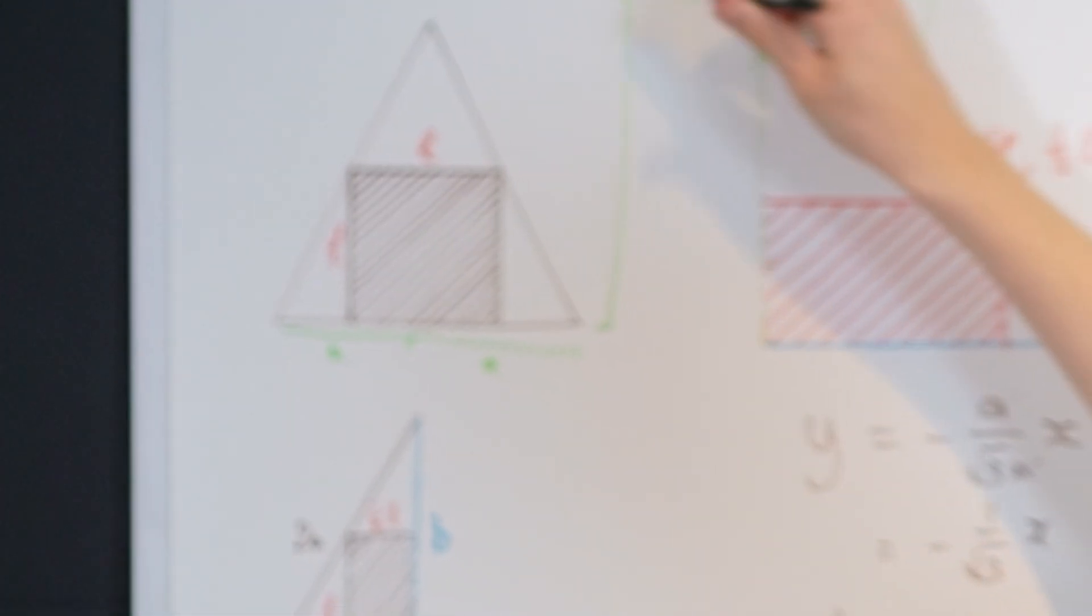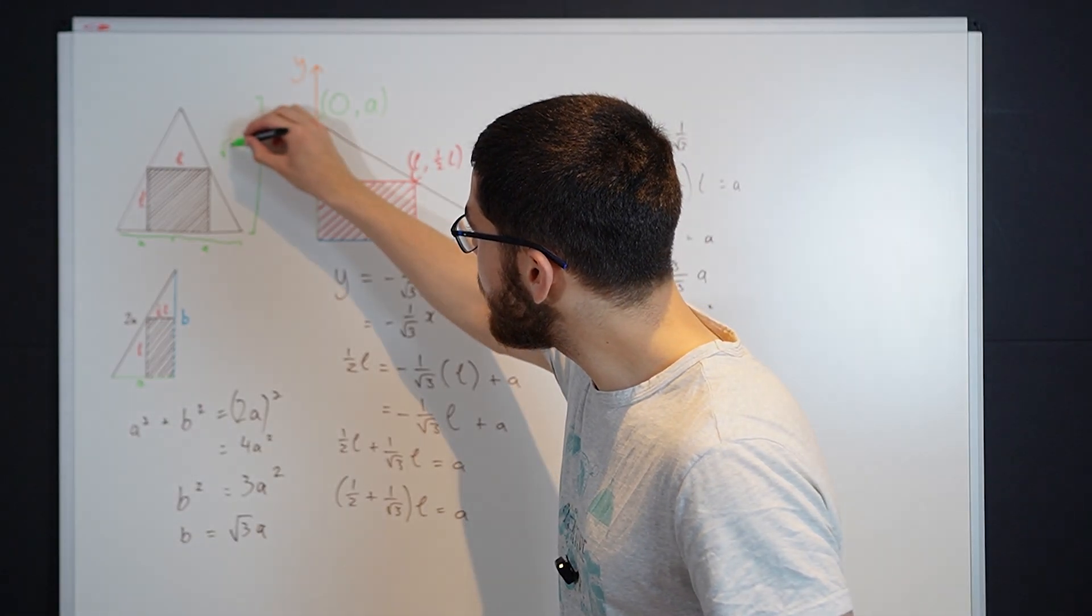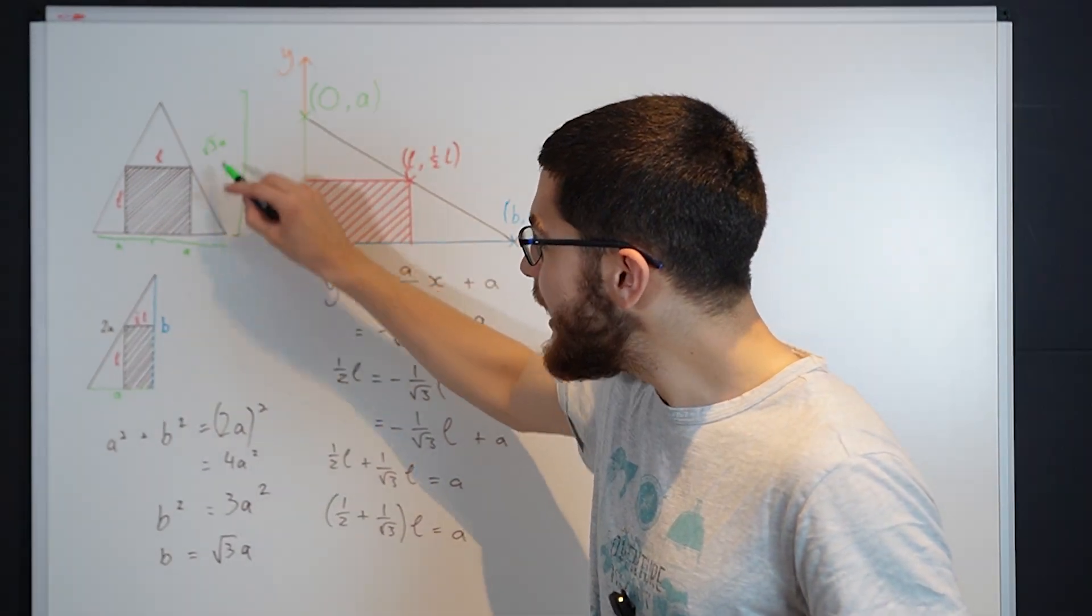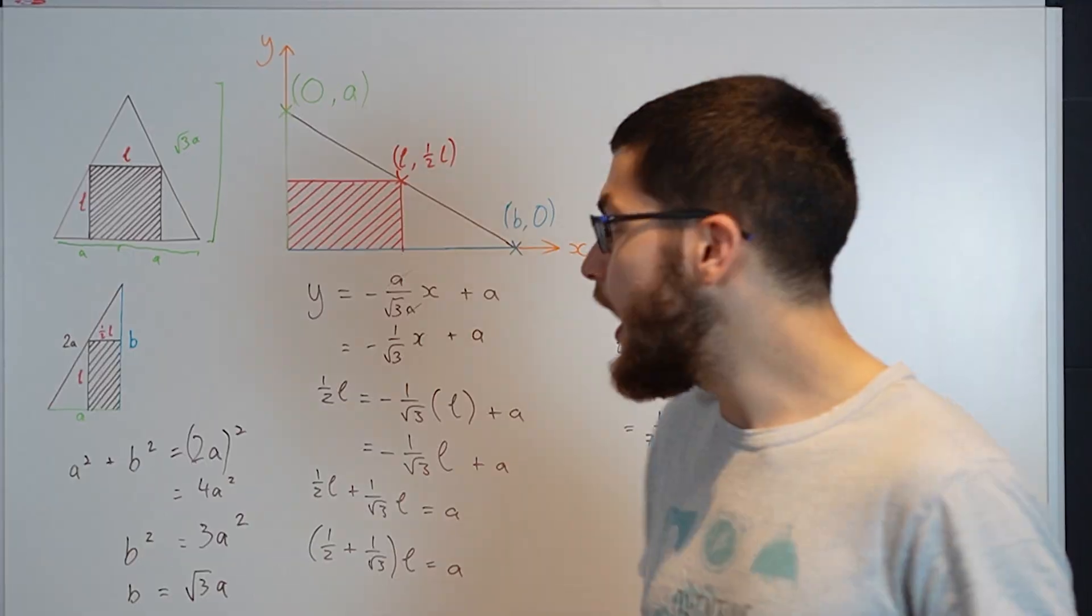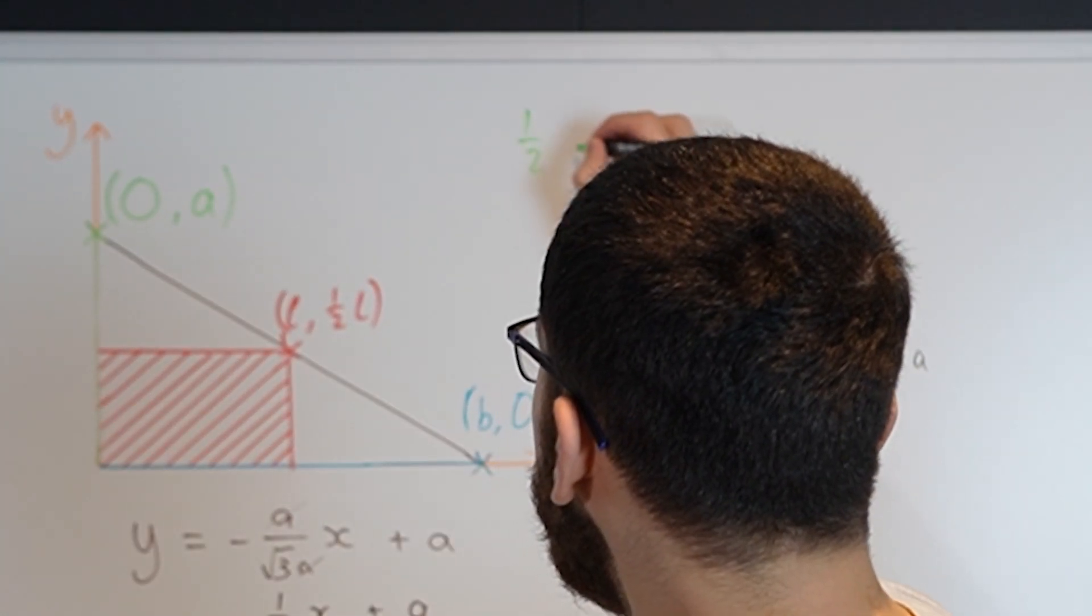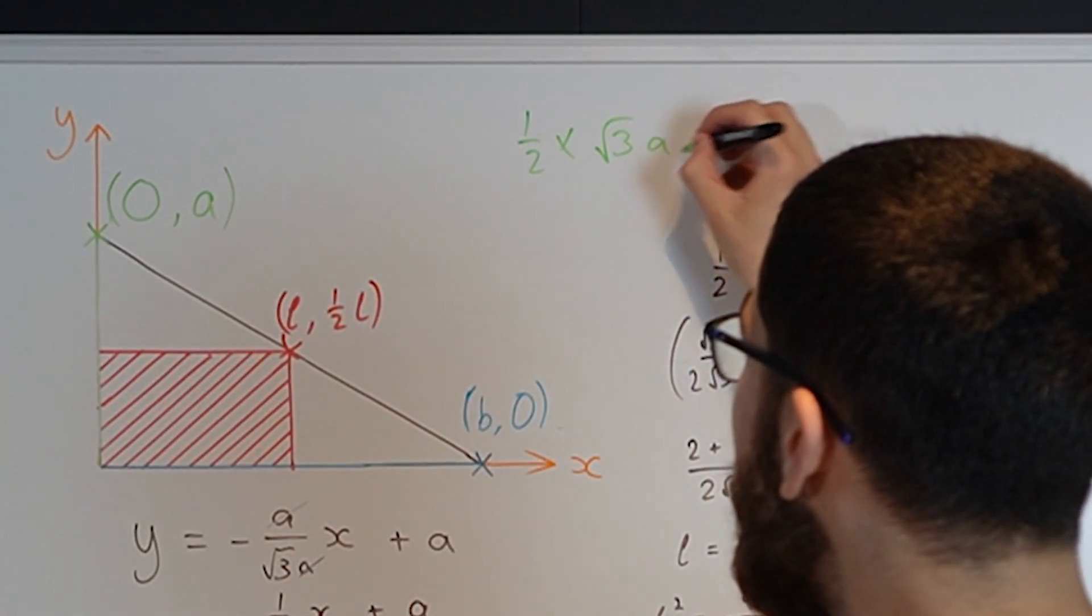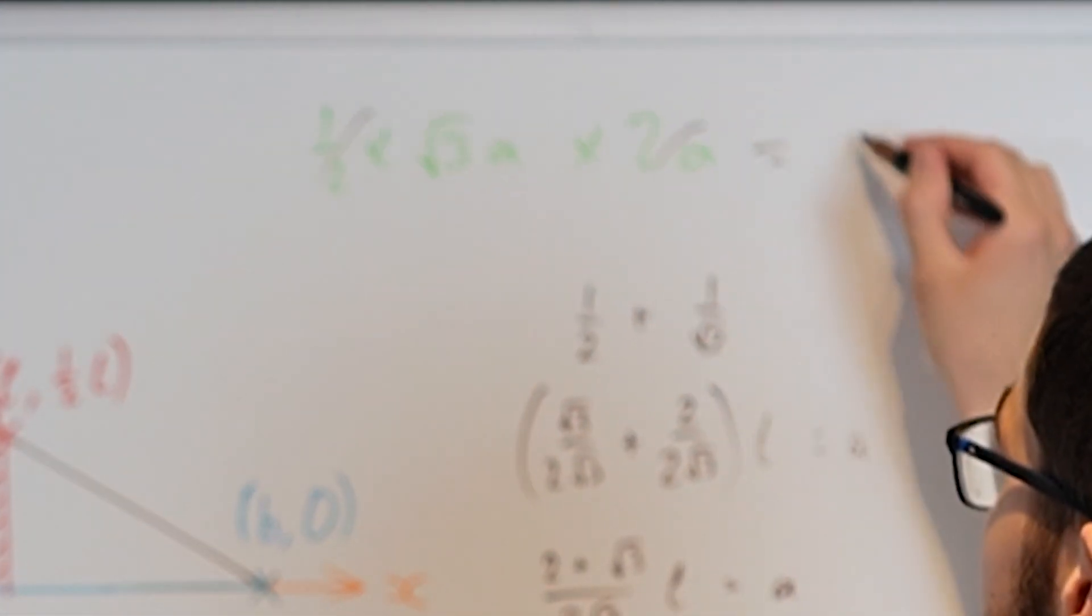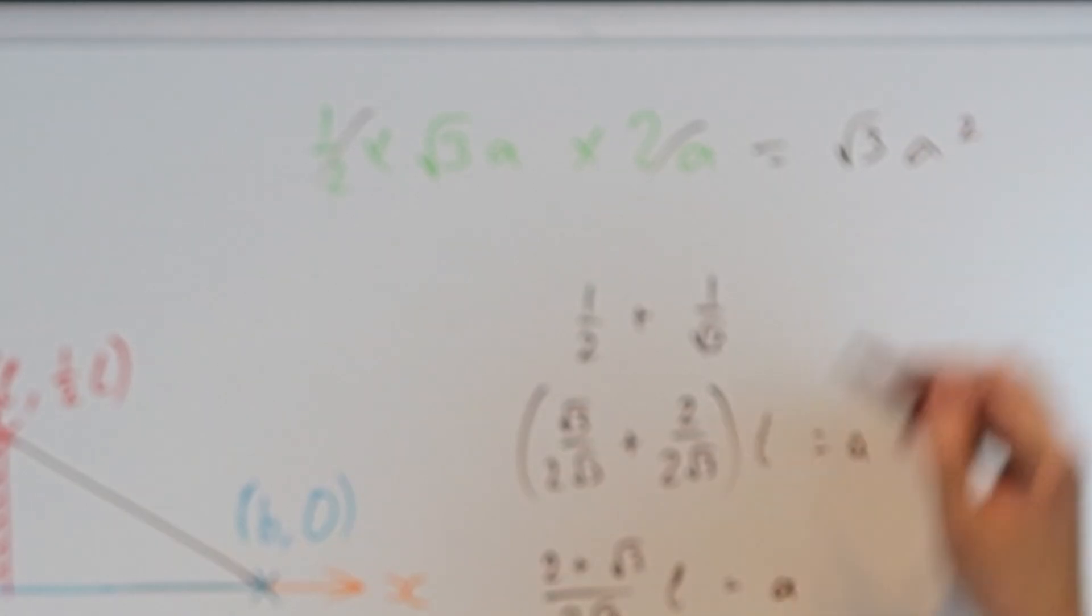And remember that we already found out that B is equal to root 3A, and B is the height of the triangle. So to find the area of a triangle, you do base times height times a half. So that's a half times root 3A times 2A. The half cancels with the 2. This gives us root 3A squared.